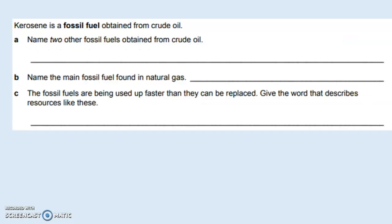Kerosene is a fossil fuel obtained from crude oil. Name two other fossil fuels obtained from crude oil. Think about the fractionating column and what else you get from there. You've got to name two other, you cannot name kerosene. You can write petrol, diesel oil, or fuel oil. Name the main fossil fuel found in natural gas. That is methane. The fossil fuels are being used up faster than they can be replaced. Give one word that describes resources like these. Those are non-renewable resources.